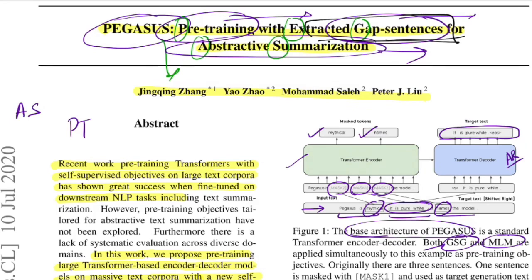I found this paper to be extensively written — it's around 60-65 pages long, where after the references the authors have given ample examples of summaries their model generated. I'd encourage you to go through that as well; I'll put the link in the description. Make sure you hit the like button, subscribe, and comment below for any paper you want me to walk through. Share this video with peers who are interested in this stuff. See you in the next one!